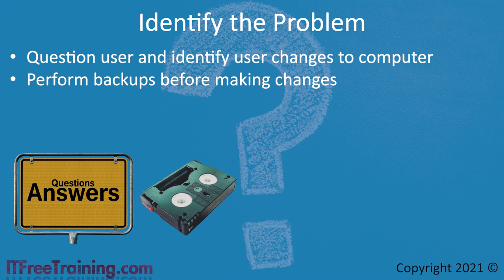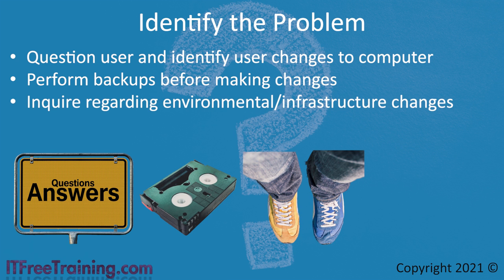The next question to ask is: has there been any environmental or infrastructure change recently? You may find out things like there were IT staff working in the network cabinet earlier, or that the user moved departments. This may be as simple as moving a computer from one side of the room to the other, but on some networks this can cause problems. In our example, the user changed departments and is still doing some work for their old department, needing software from there that is no longer working.